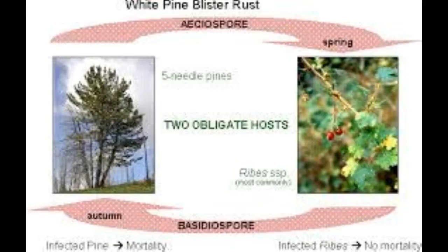Hey y'all, Mike Webb here, going to tell you a little bit about the white pine blister rust. White pine blister rust was introduced from Asia in the early 1900s and it causes swollen cankers that eventually girdle entire branches or stems, resulting in tree death. White pine blister rust is the most important disease of eastern white pine in the United States. The disease is most severe in seedlings and saplings, but mature trees are also susceptible.